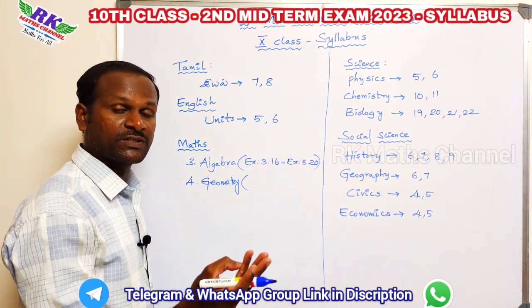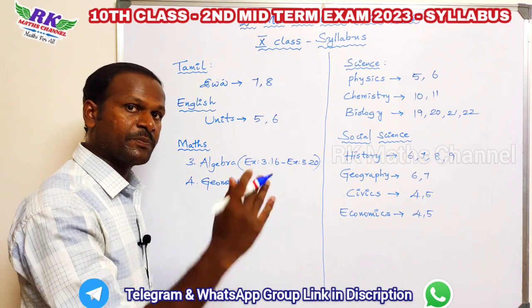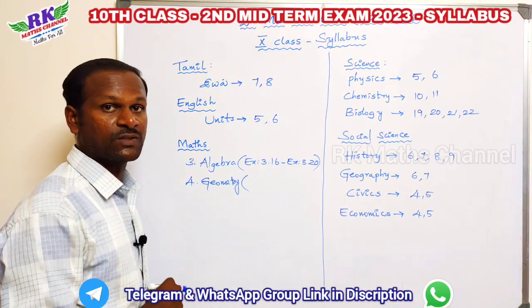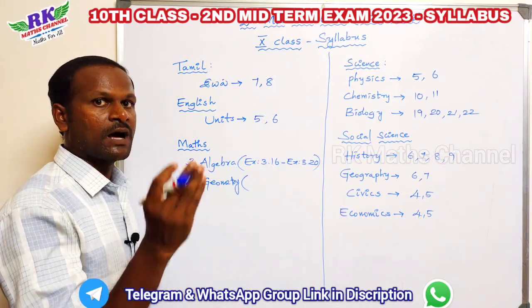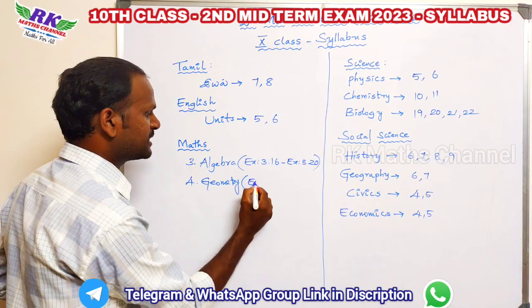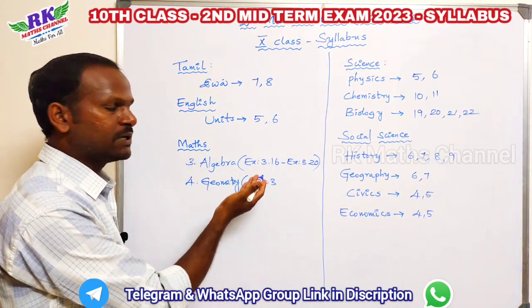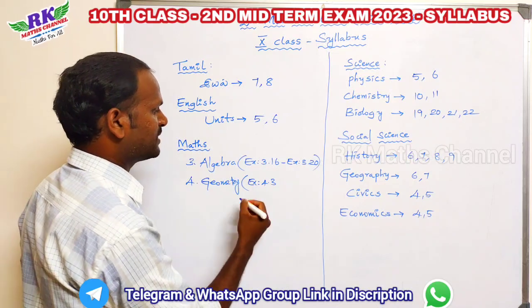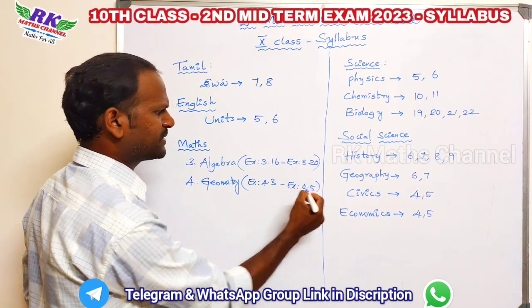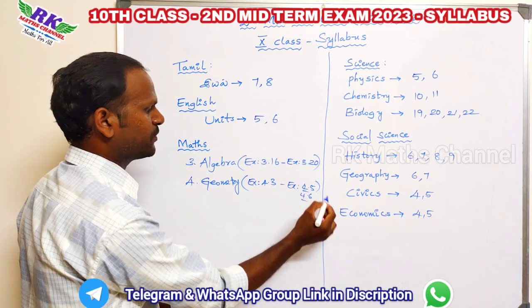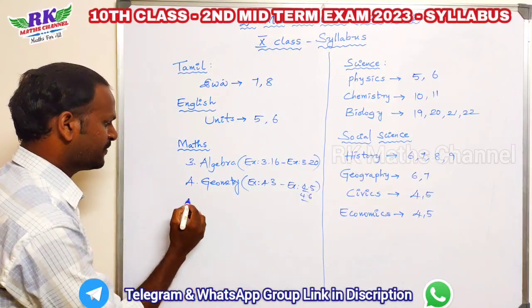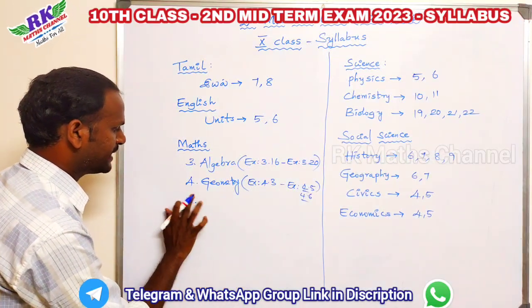The fourth unit is Geometry: basic proportionality and angle bisector. Exercises 4.3, 4.5, and 4.6 — that covers the full geometry portion. The fifth unit is also Geometry.